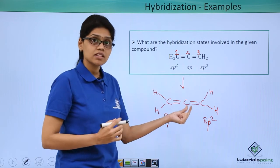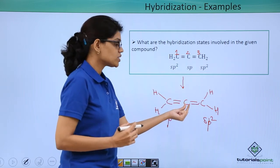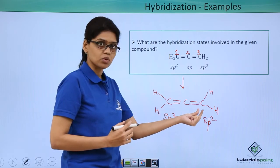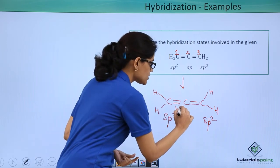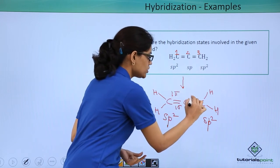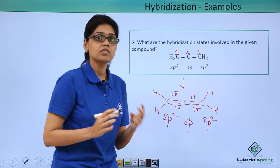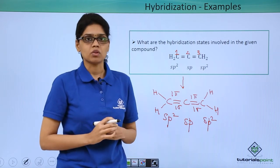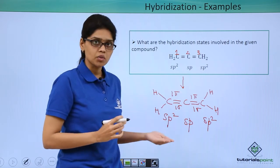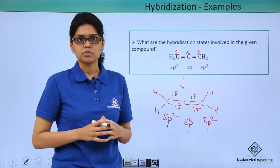Now the second carbon that is C2 has how many sigma bonds? Here we can see that C2 is involved in 2 double bonds and it essentially have 1 sigma bond here, 1 sigma bond here and 1 pi bond here, 1 pi bond here. So in sp hybridization we have 2 sigma and 2 pi bonds. So this is essentially how you can identify the hybridization states of various carbon atoms in different compounds.